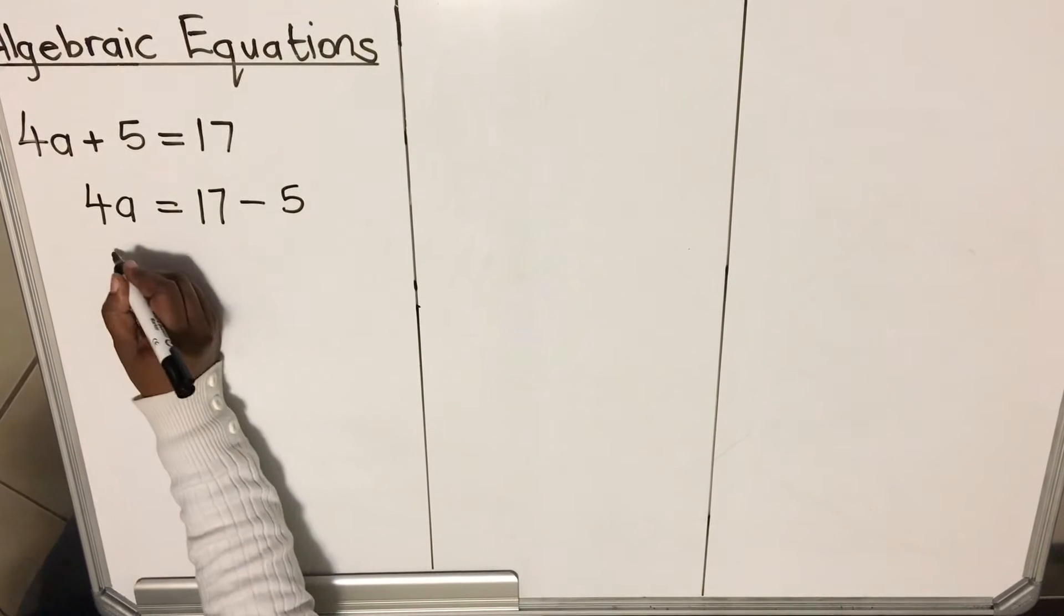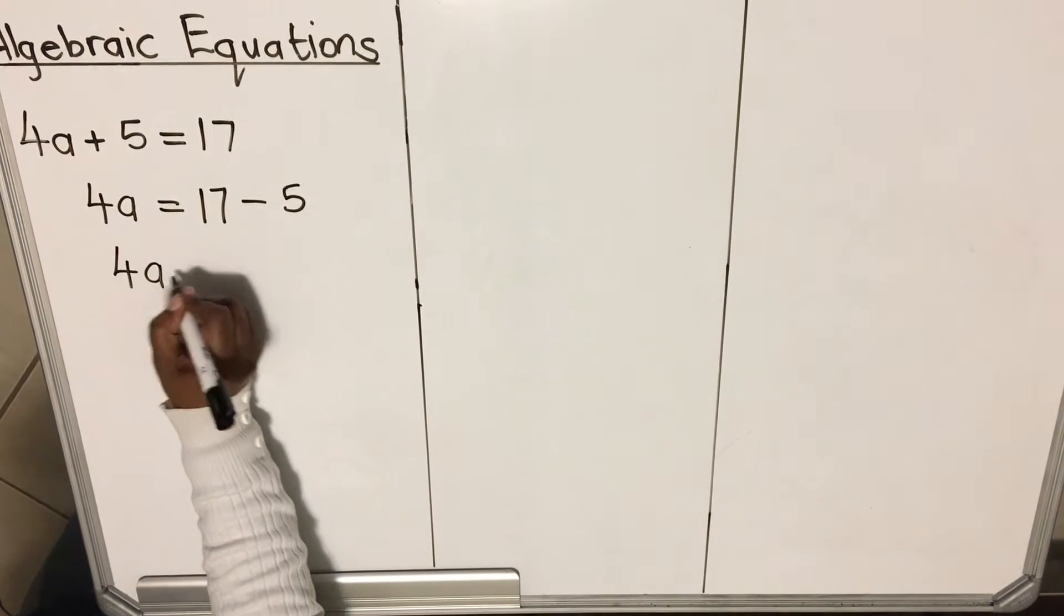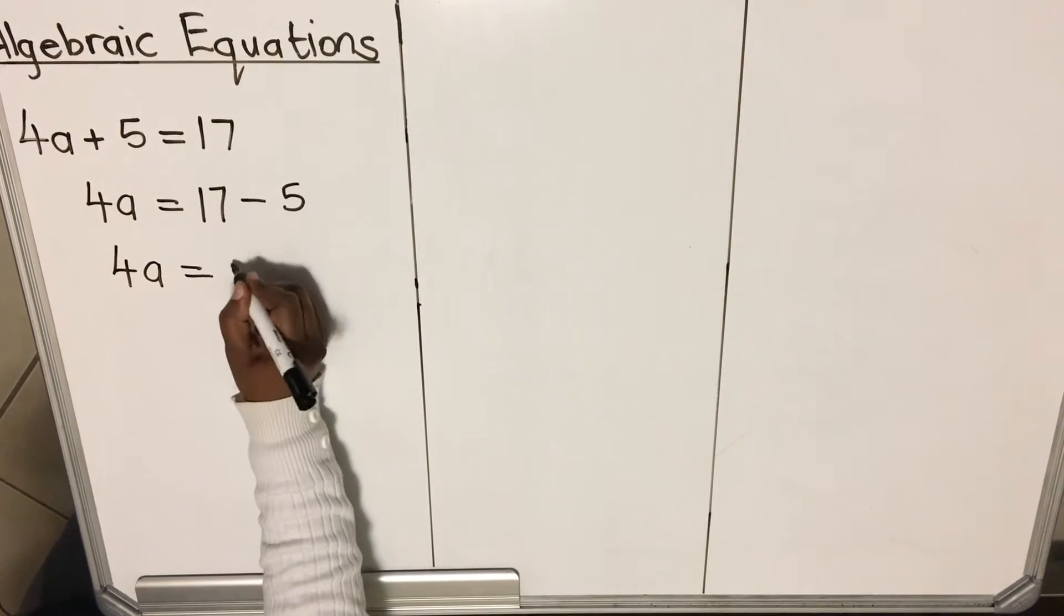These two are like terms. You can subtract them. So we have 4a. This is equal to 17 minus 5 is 12.